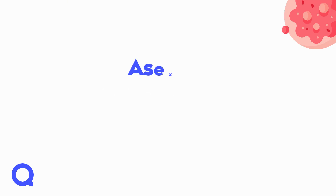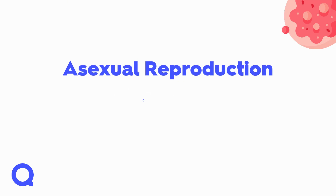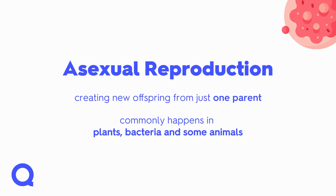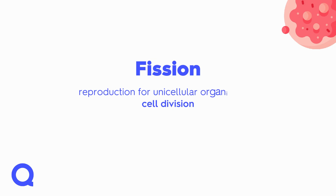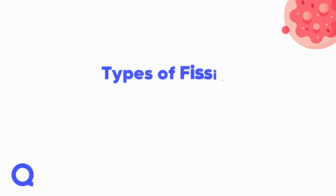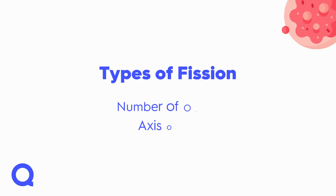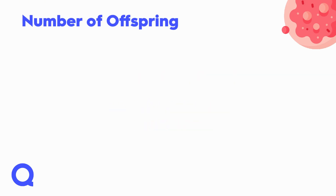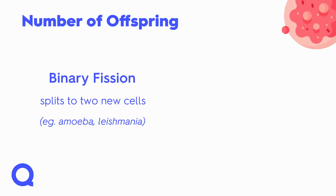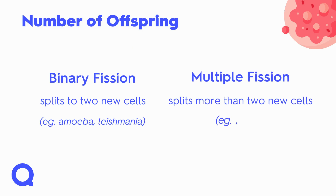Let's review. Asexual reproduction is creating new offspring from just one parent, and it commonly happens in plants, bacteria, and some animals. Fission is the reproduction method for unicellular organisms through cell division. The type of fission can be based on the number of offspring and the axis of division. Binary fission splits into two new cells, like amoeba and leishmania.